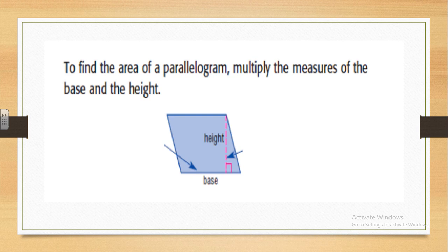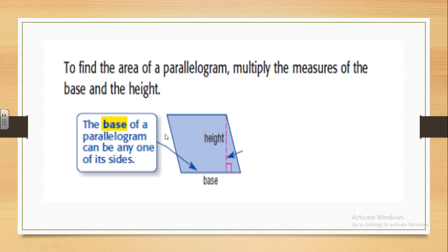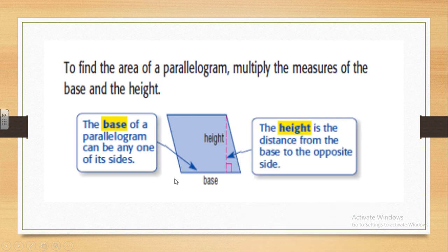First of all, you need to know that to find the area of a parallelogram, multiply the measure of the base and the height. So if that's the parallelogram, this side is called the base and this line represents the height. The base of a parallelogram can be any one of its sides. And the height is the distance from the base to the opposite side.